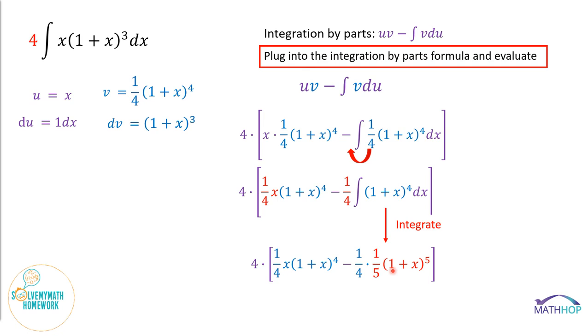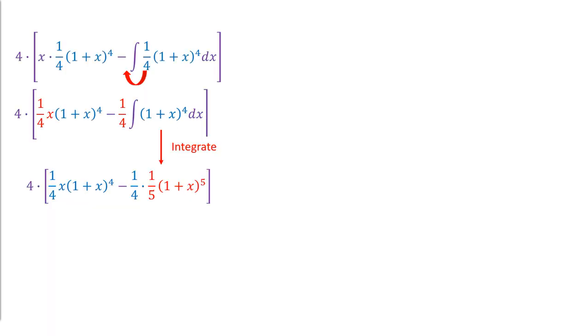We are going to clean this up. We're going to distribute the 4. We're going to add our constant. We're going to do all of that. But first, let me get some more room for myself. Now let's clean this up. We're going to multiply 1/4 times 1/5 and we're going to get 1/20.